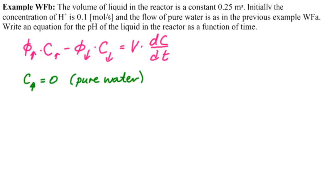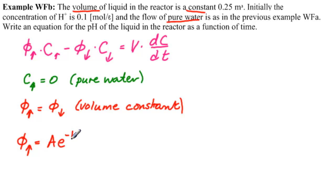And what else do we know? We know that phi going in equals phi going out. Why? Because the volume is constant. And we are going to solve this in rather general terms. So we're going to say that phi going in is A e to the minus kt.